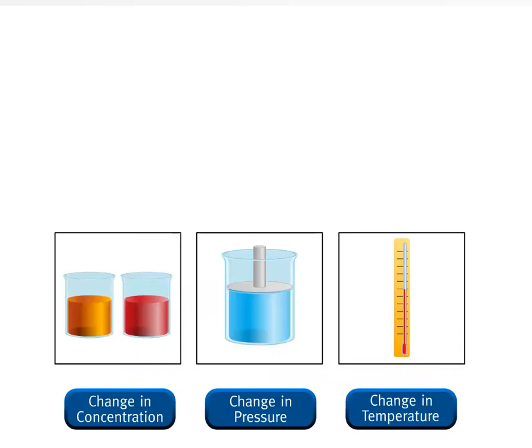Le Chatelier's principle states that if an external stress is applied to a system at equilibrium, the system adjusts in such a way that the stress is partially offset. The word stress means a change in concentration, pressure, volume, or temperature. Click on one of the buttons below to view an animation showing the effect of these stresses on a system at equilibrium.